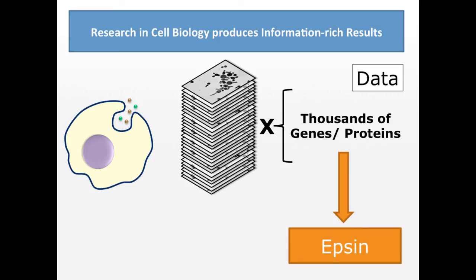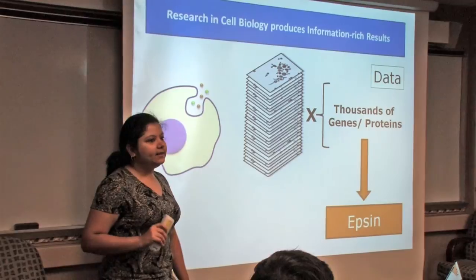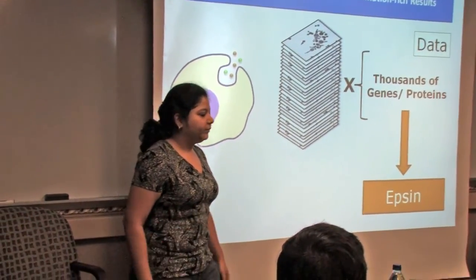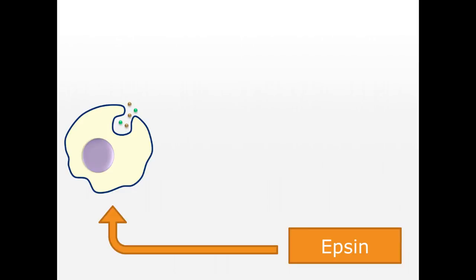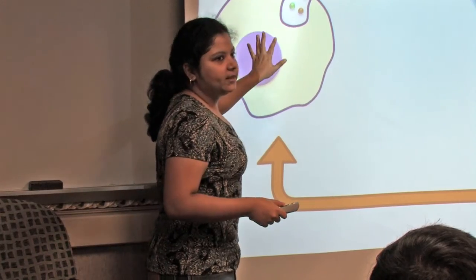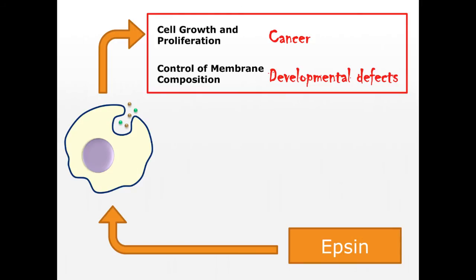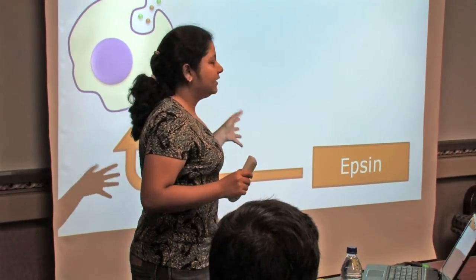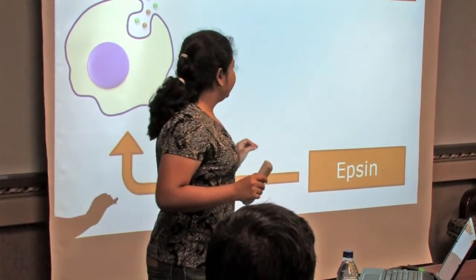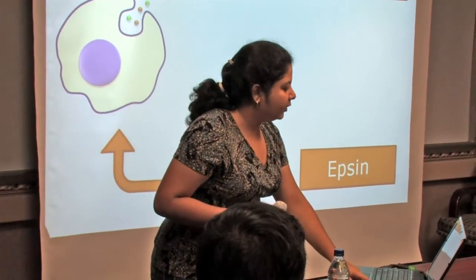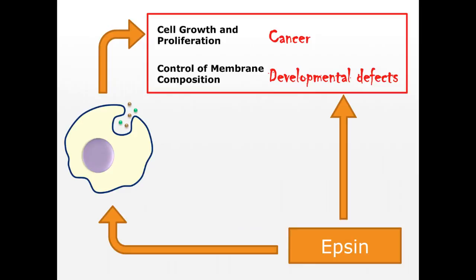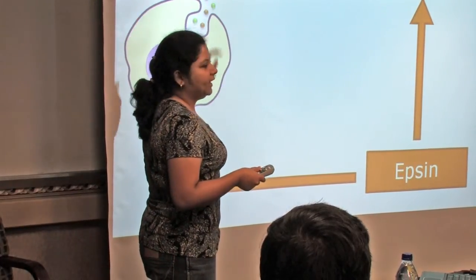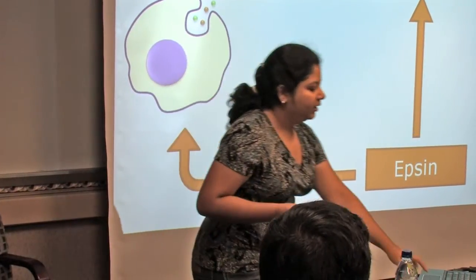One such protein that is important for endocytosis is epsin, and this is the protein that we work with in our lab. We know that epsin is important for endocytosis, and we know that if endocytosis is not normal, it can lead to several defects like cancer and developmental diseases. Epsin has a very rare and interesting feature — it is a protein that can cause these diseases when it's misregulated, which is something most proteins don't do.